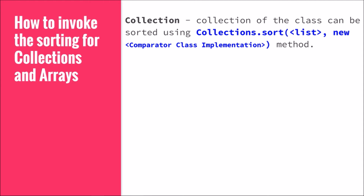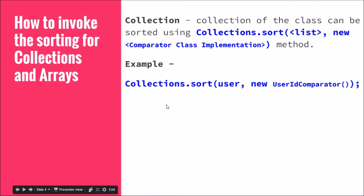To invoke sorting for collections using a comparator, call Collections.sort, pass the list, then pass 'new UserIdComparator'. For example: 'Collections.sort(users, new UserIdComparator())'. Once executed, all users will be in sorted order by id, because the UserIdComparator compares based on id.